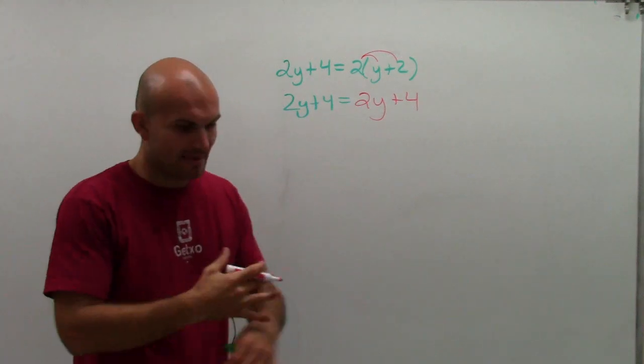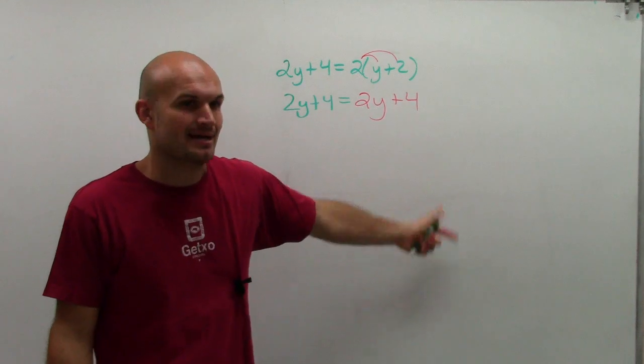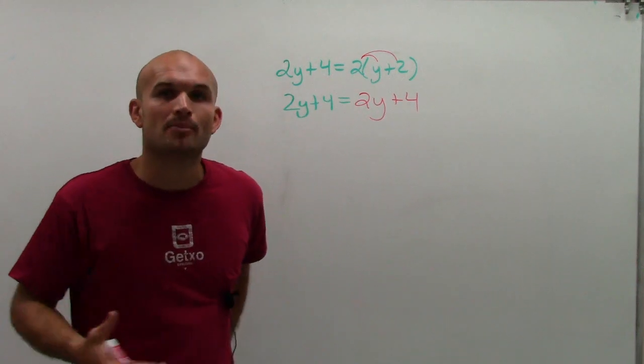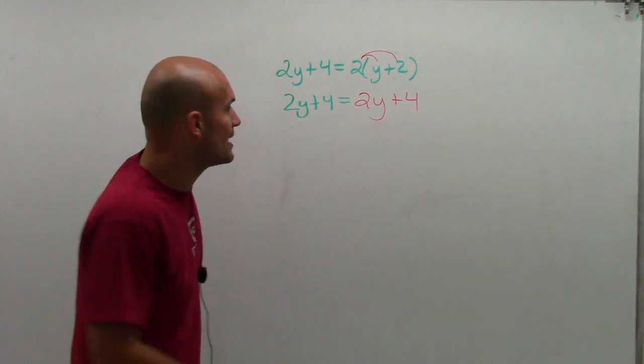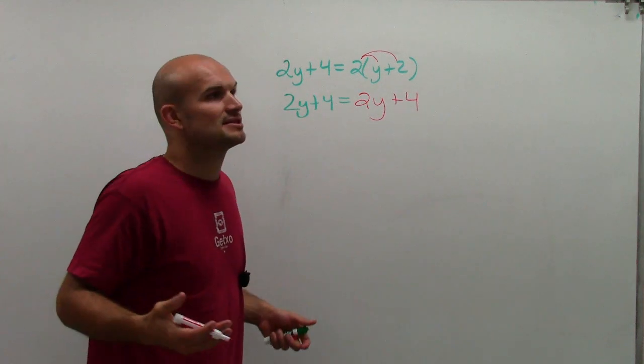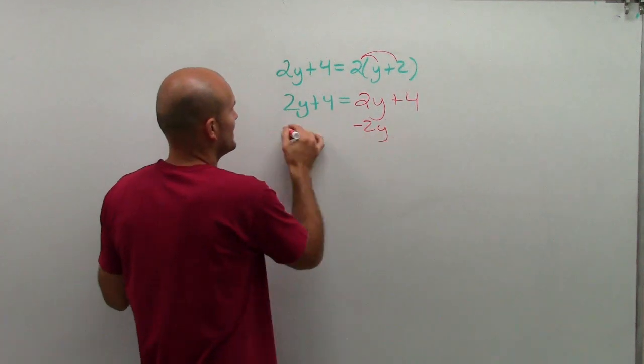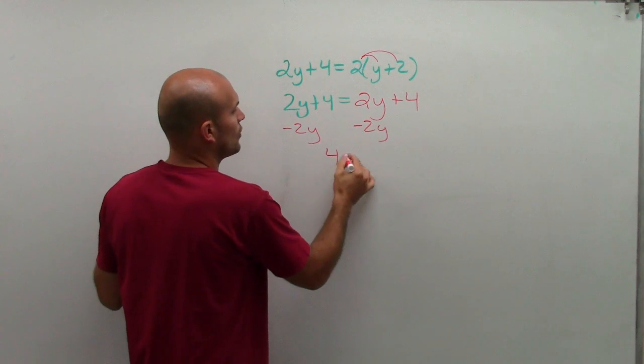Now, I automatically look at this, and I say, all right, I have the exact same thing on the left side and the right side. So it doesn't matter which number I plug in. If I subtract now 2y to get it on both sides, you get 4 equals 4.